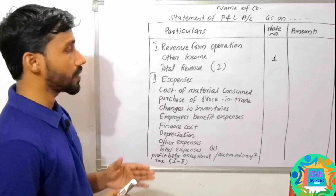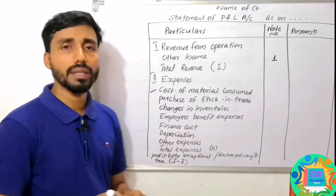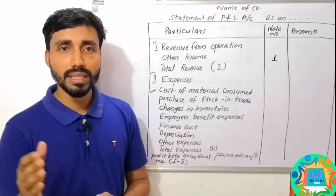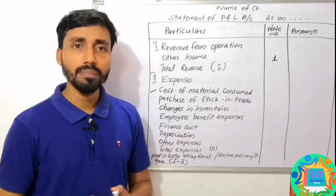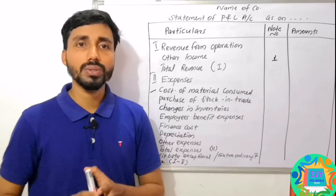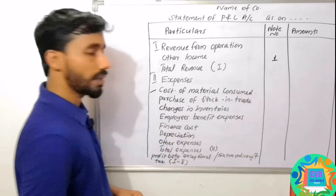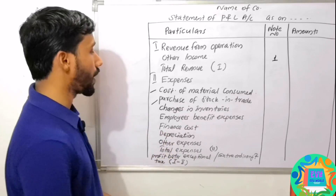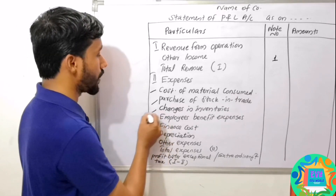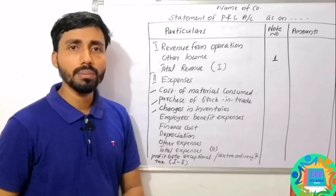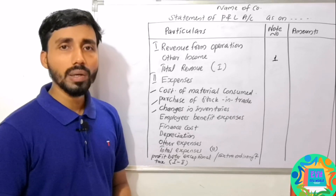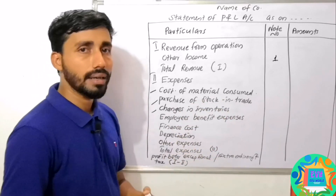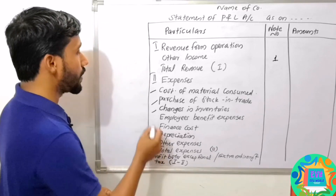The second part is expenses. First, cost of material consumed — you have to record the direct cost of material consumed. If you have total revenue in the consumption, you pay the total amount. The next part is the purchase of stock in trade. We have to account for changes in inventory; we minus the closing stock from the opening stock.